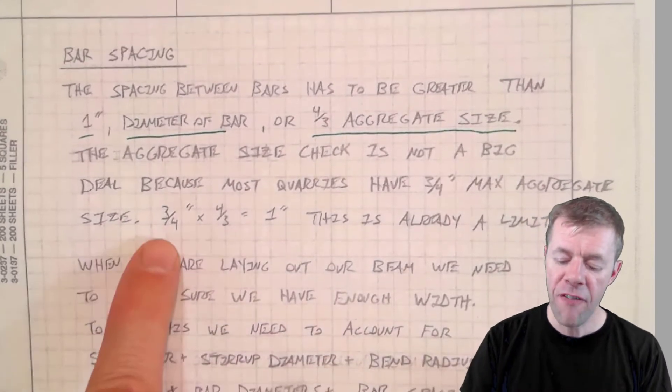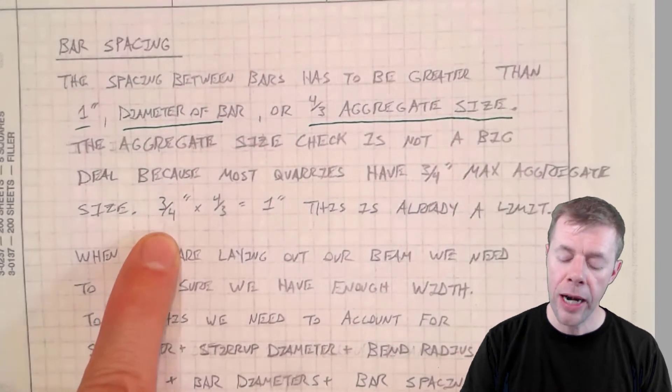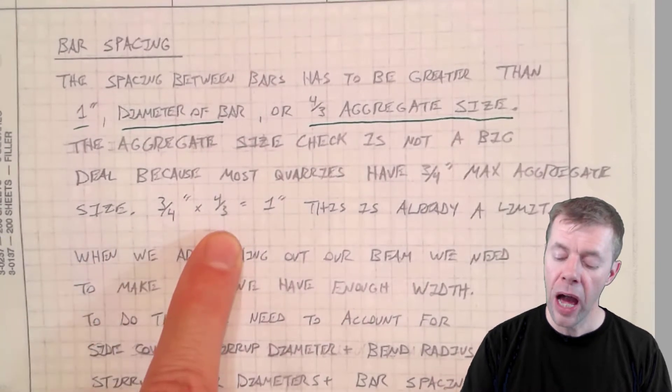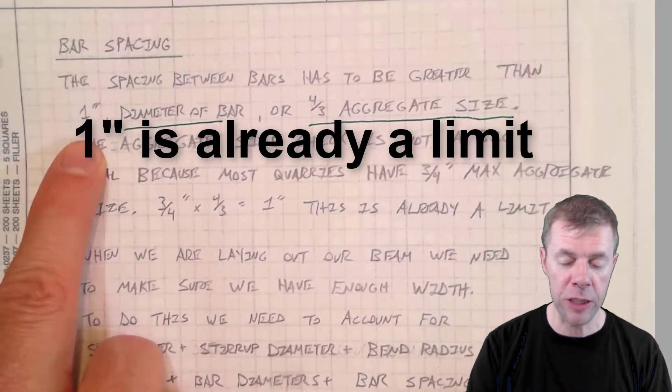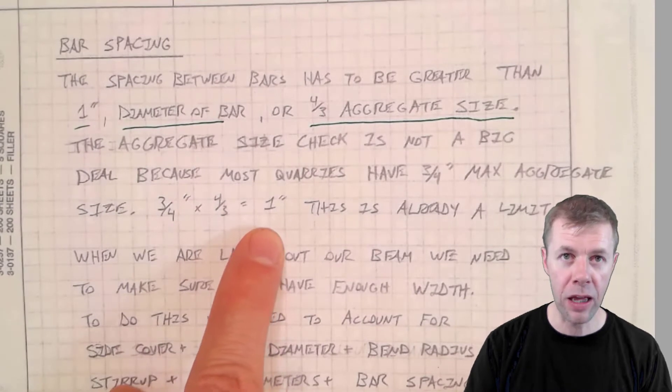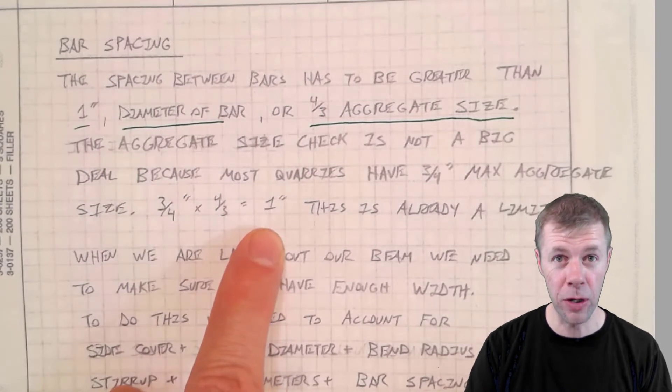For example, if I have a three-quarter inch maximum aggregate size and I multiply that by four-thirds, I will get one inch and this is already a limit that you're not supposed to go below. Therefore, if they make it at one inch, they're going to be okay.